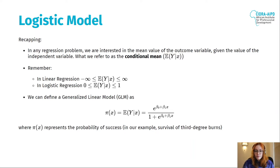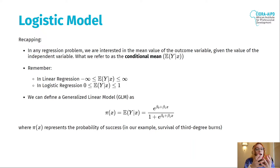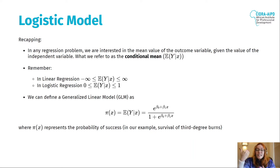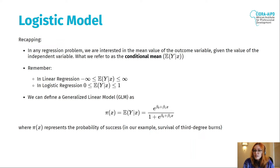In any regression problem, we're interested in the mean value of our outcome variable — our response variable — given the value of the independent variables. In our case, the outcome is the mean survival rate and the independent variable is the area of the burn. We refer to that as a conditional mean: the expected value of Y given X, given our independent variable.